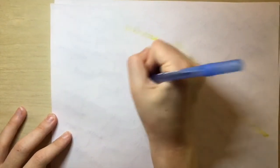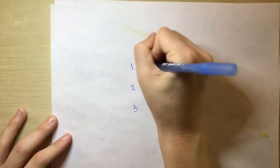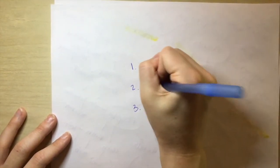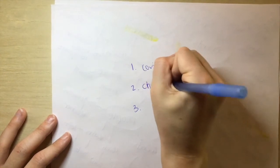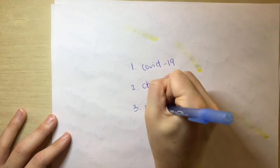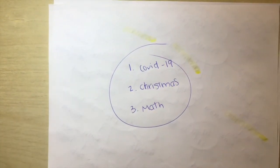And I'm actually going to flip them over and write one, two, three: COVID-19, Christmas, and math. Write down the three things that you want to write about. If you want to write about the same things, okay, but try and write some different things.